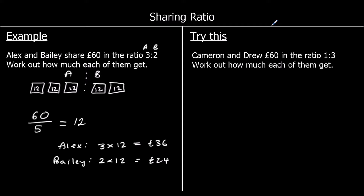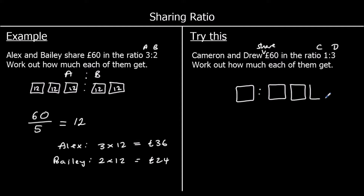This time we've got Cameron and Drew sharing £60 in the ratio 1 to 3. Work out how much each of them get. So we've got one part for Cameron and three parts for Drew. Cameron's going to have one box and Drew gets three boxes. There are four boxes; we need to put the same amount in each box, so we're going to do 60 divided by 4. We can halve it and halve it again, and that gets us to 15.